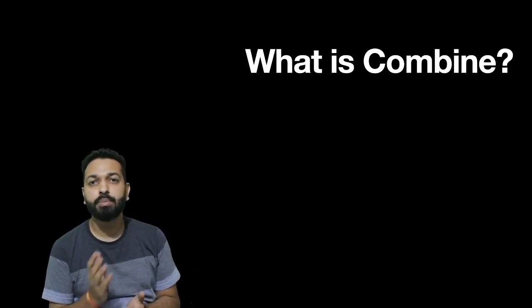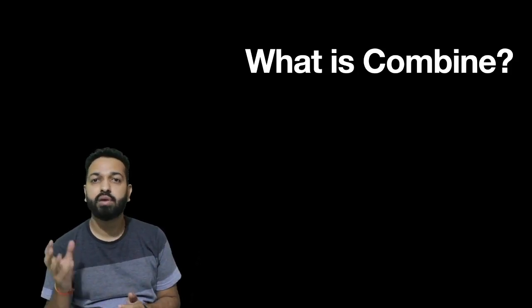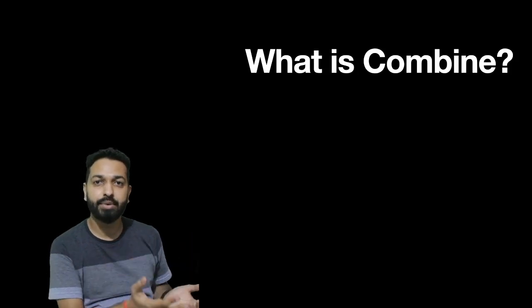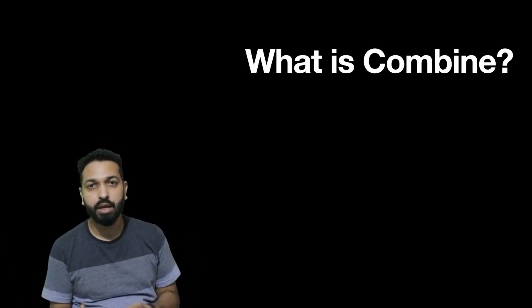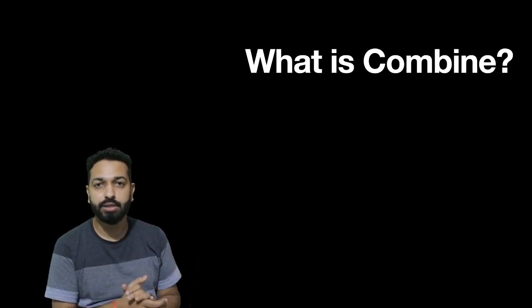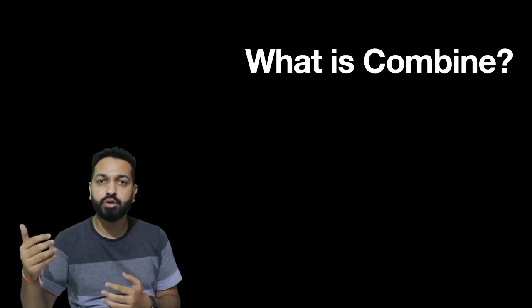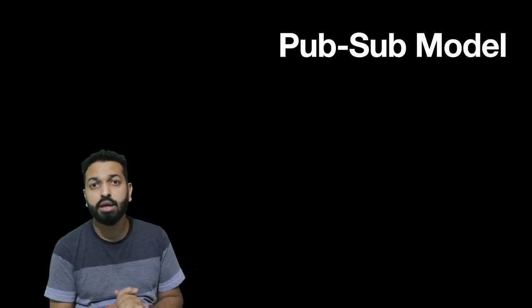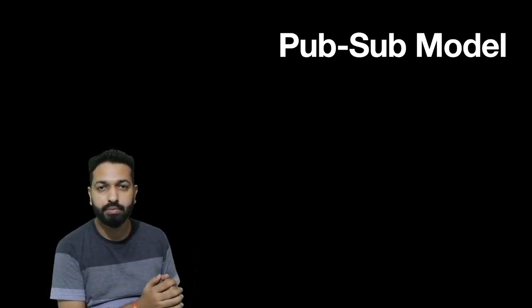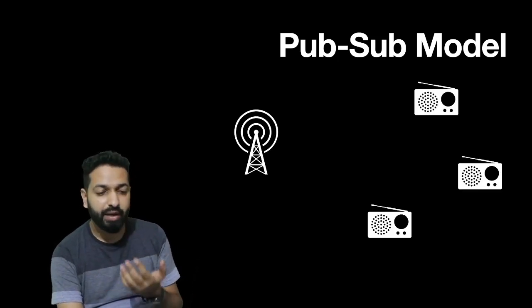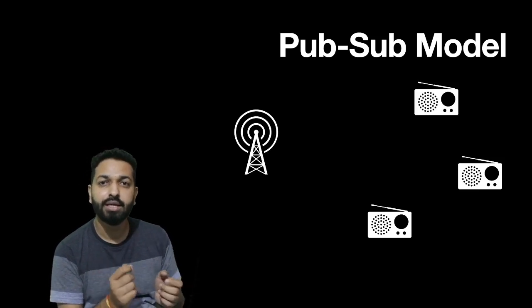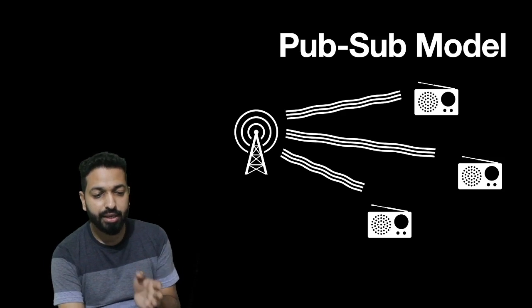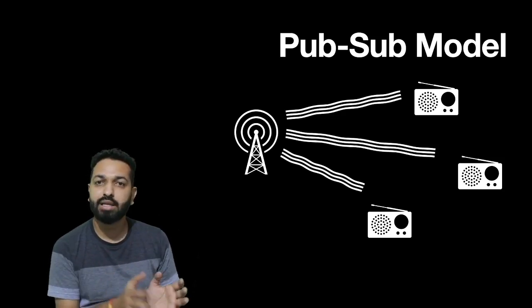Combine works on the principle of the pub-sub model — the publisher-subscriber model. We have a publisher which produces the value, and then we have one or more subscribers which consume the value produced by the publisher. Combine has also introduced a third entity called operators. You can relate the pub-sub model to how radio works: we have a transmitting tower from which messages are transmitted, and devices tune into a particular frequency to listen to those messages. The radio tower is the publisher, the devices are the subscribers, and the waves are the messages being published.